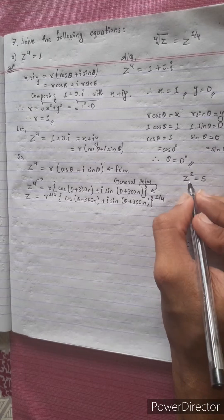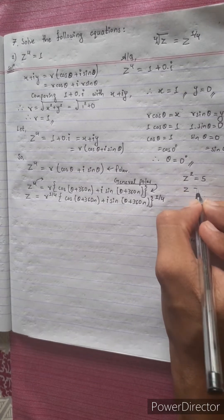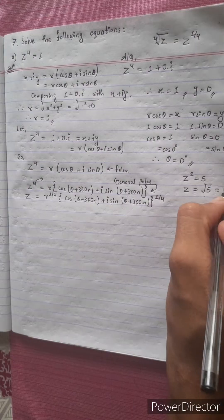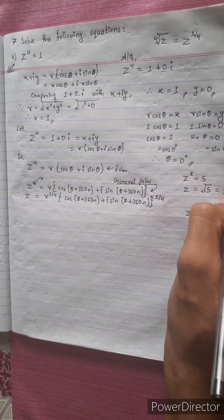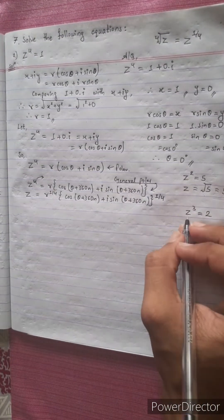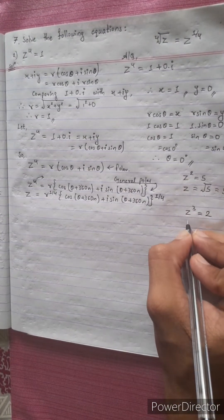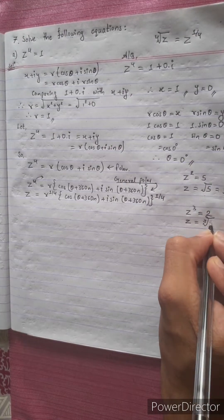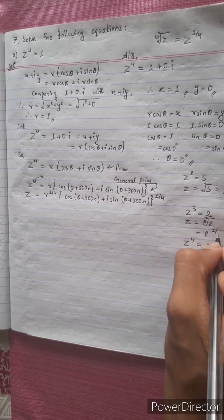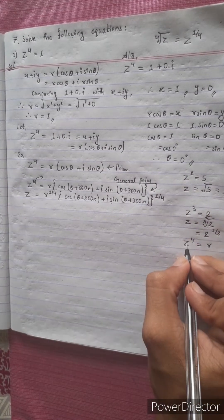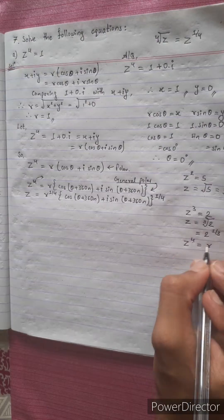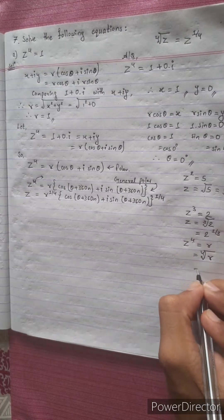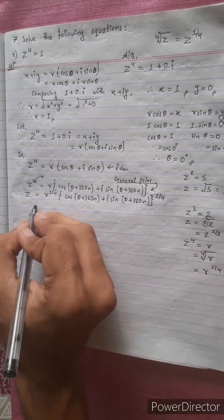For example, if z squared equals 5, then z equals square root of 5, which is 5 to the power 1 by 2. Similarly, if z to the power 4 equals 1, then z equals 1 to the power 1 by 4.